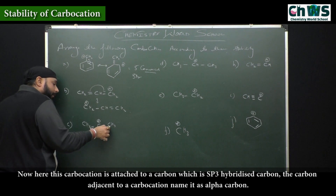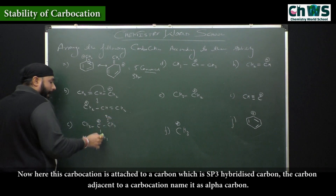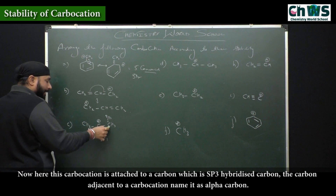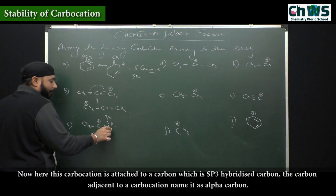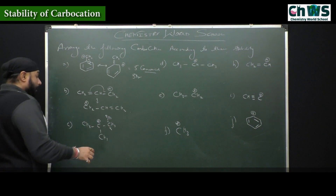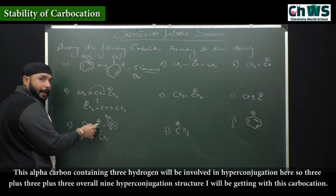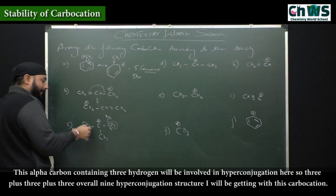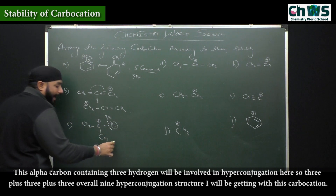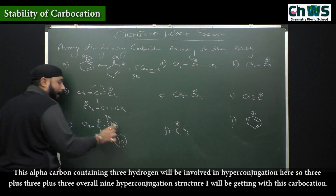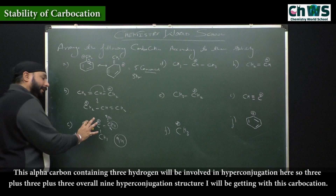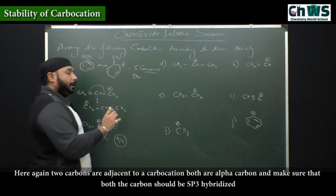Here, this carbocation is attached to a carbon which is sp3 hybridized — name it as the alpha carbon. This alpha carbon contains three hydrogens, and all the hydrogens will be involved in hyperconjugation. So three plus three plus three — overall nine hyperconjugating structures I will be getting for this carbocation.